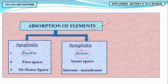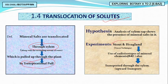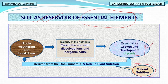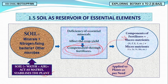We studied translocation of solutes — mineral salts translocated through phloem by transpiration pull — described by Stout and Hoagland using radioactive isotope potassium-42. Soil is the reservoir of essential elements. If soil lacks important nutrients, fertilizers supplement the macro and micronutrients externally according to plant requirement after a soil test.